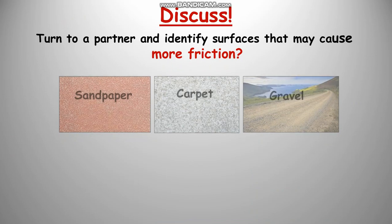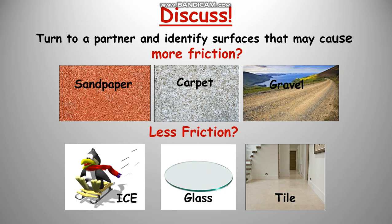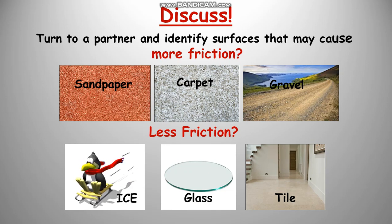Let's discuss which of those surfaces causes more friction: sandpaper, carpet, or gravel? The more rough an object is, the more friction it has. Gravel is rougher than sandpaper, that's why gravel has more friction. Which of those has less friction: ice, glass, or tile? The answer is glass, because it is smoother than the rest of them.